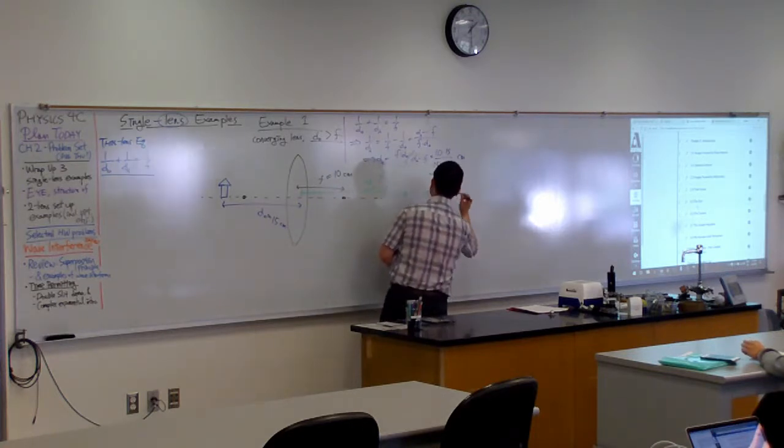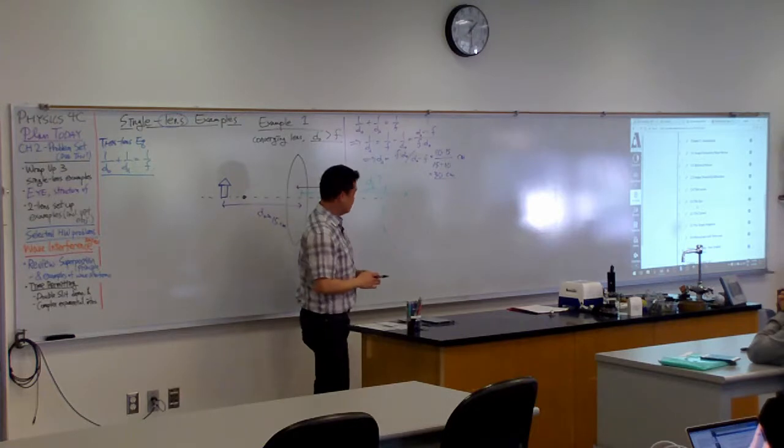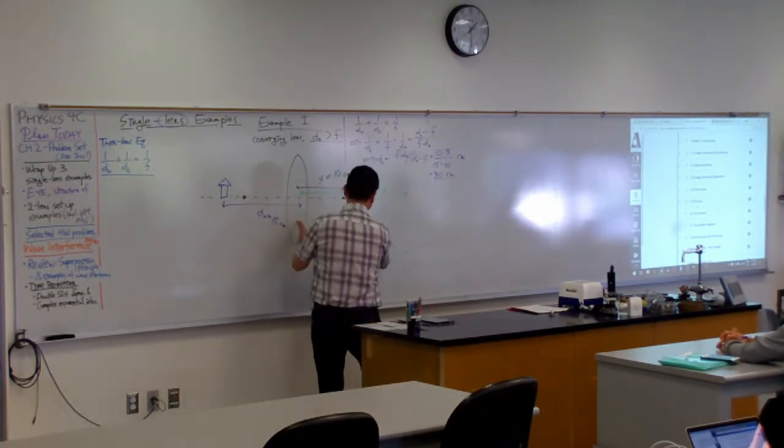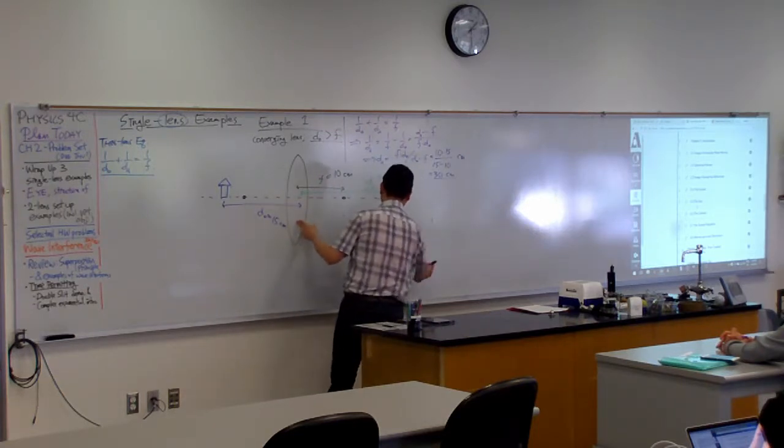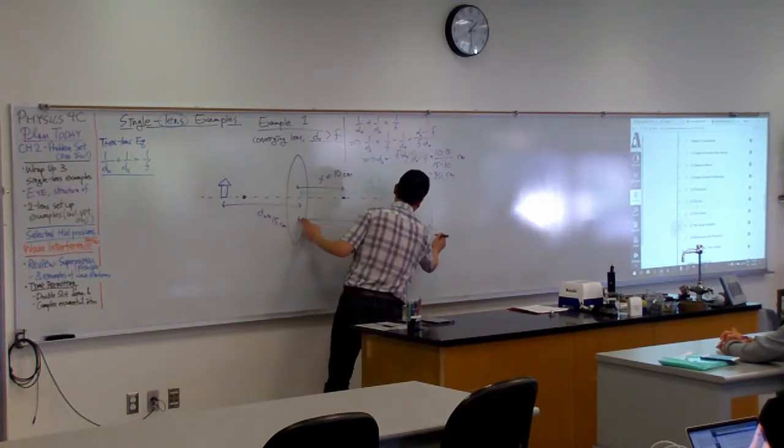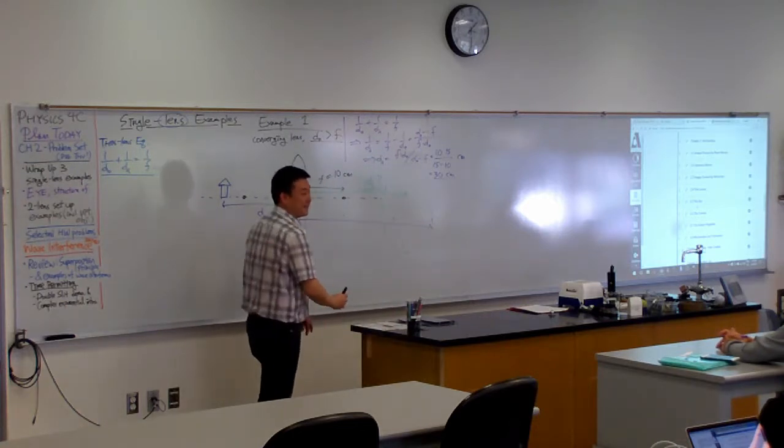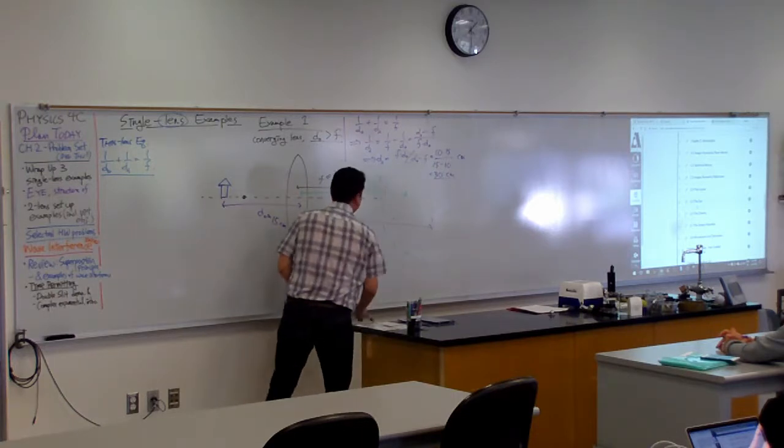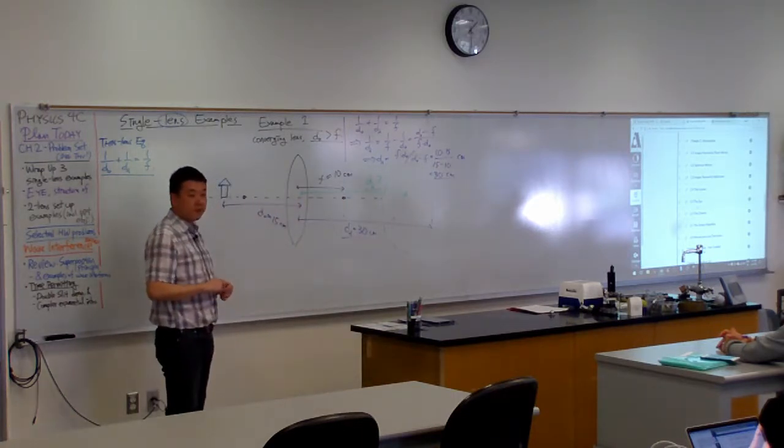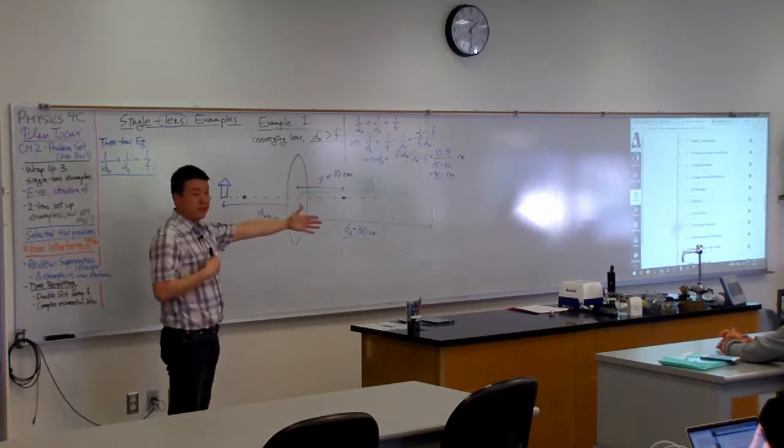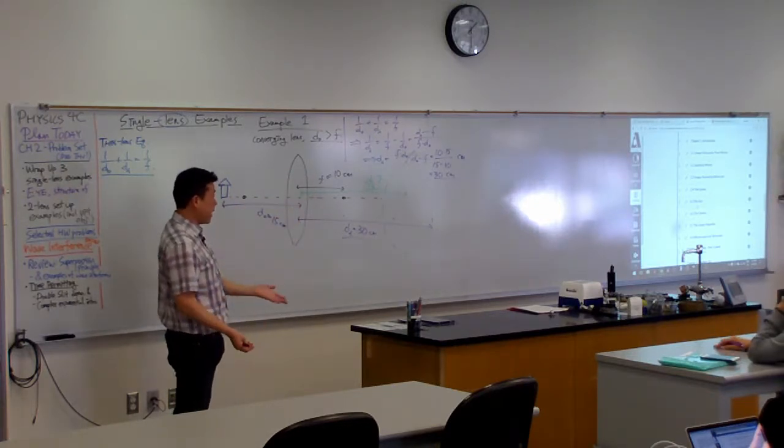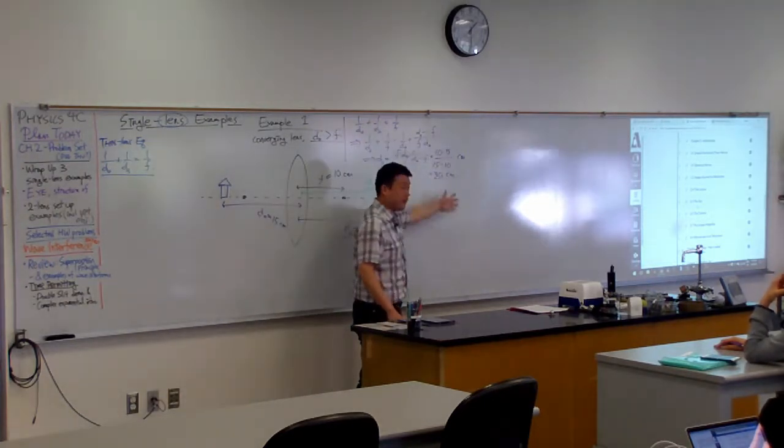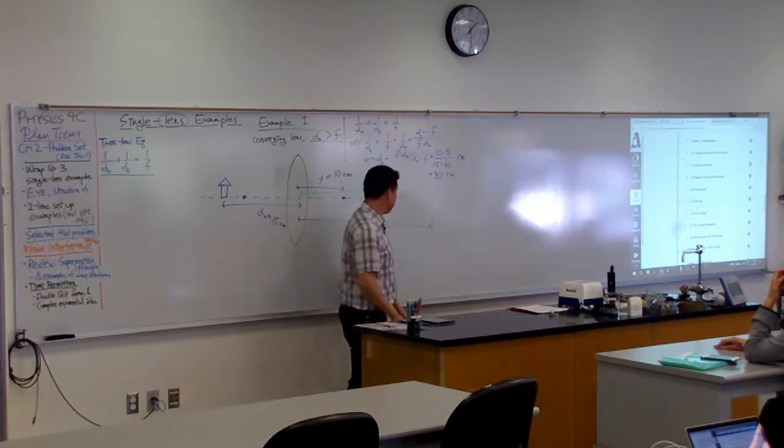All right. So that's my answer for the image distance. So apparently, if I draw this correctly, my image is supposed to be somewhere here. So this is how far away my image will be. dI equal to 30 centimeters. And, you know, that's okay as far as finding how far away the image will be. And if you're trying to do the demos that I showed you last time where I was trying to form a focused image of the filament on the whiteboard, that's kind of all you need.